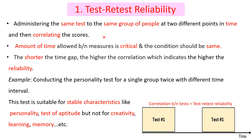The amount of time allowed between the two tests is very critical, and the conditions should be the same. The shorter the time gap between test one and test two — which are the same test — the higher the correlation between the scores, which indicates higher reliability.